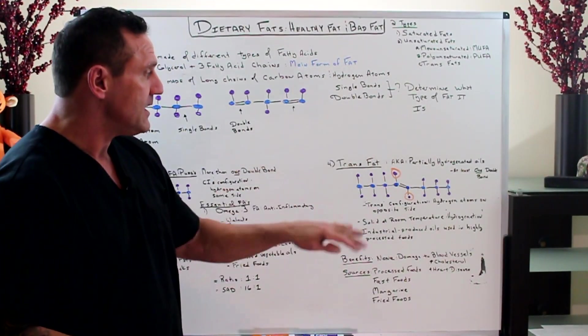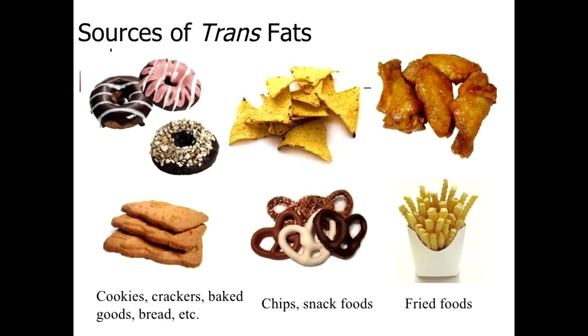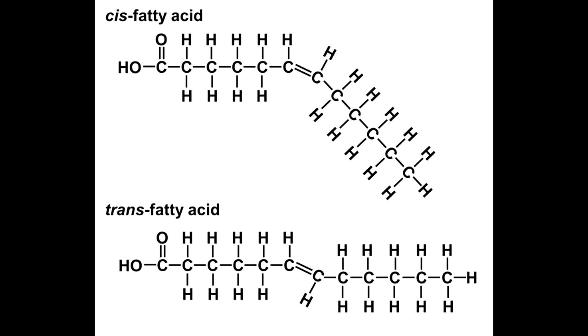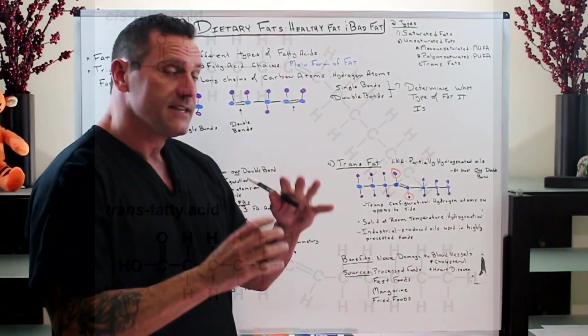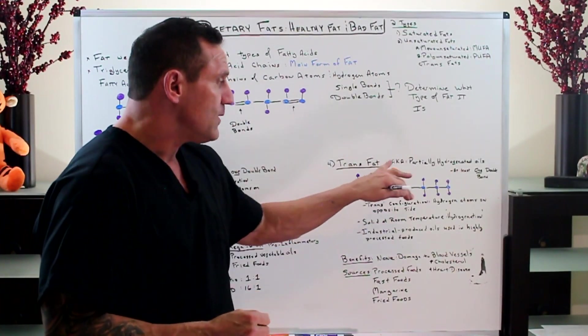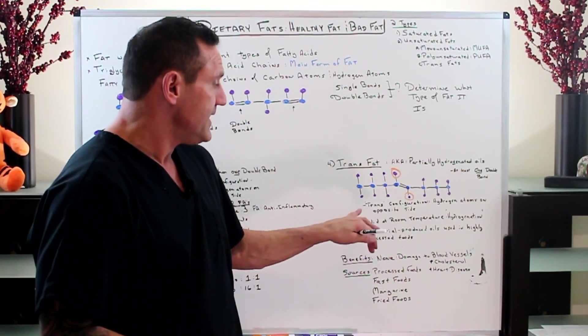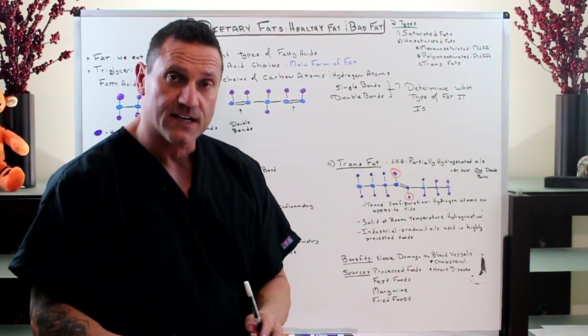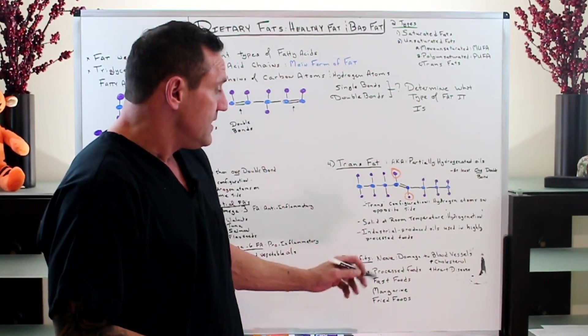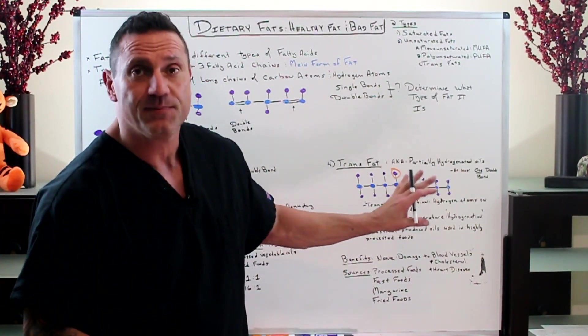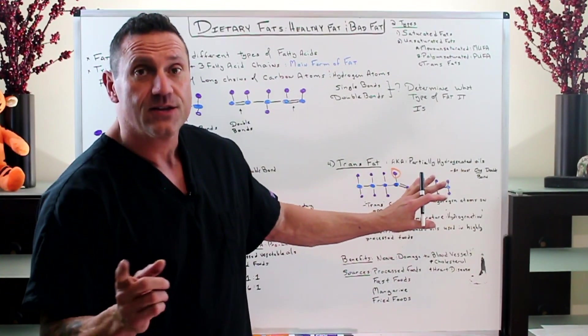Now let's talk about the worst: trans fat, otherwise known as partially hydrogenated oil. Trans fat, meaning the configuration is in a trans configuration. Yes, there's at least one double bond, but the hydrogen atoms are on the opposite side. Otherwise known as partially hydrogenated oil. It's solid at room temperature, which goes through a process called hydrogenation.